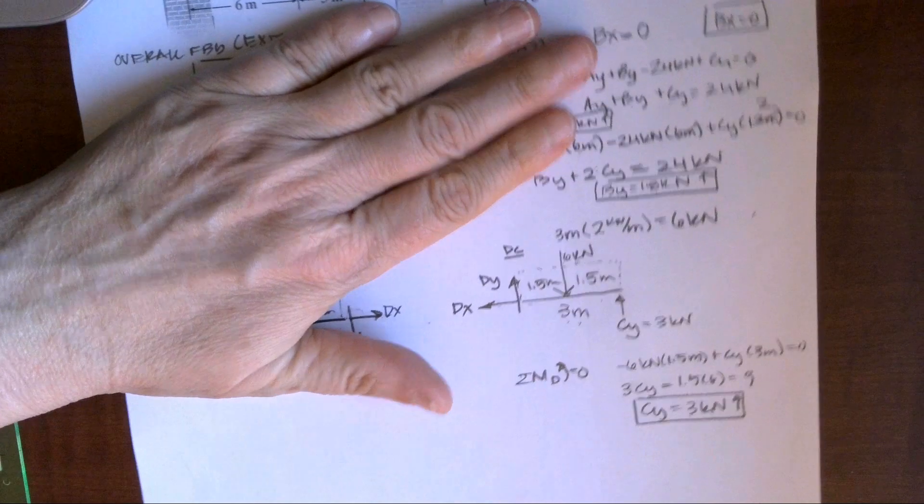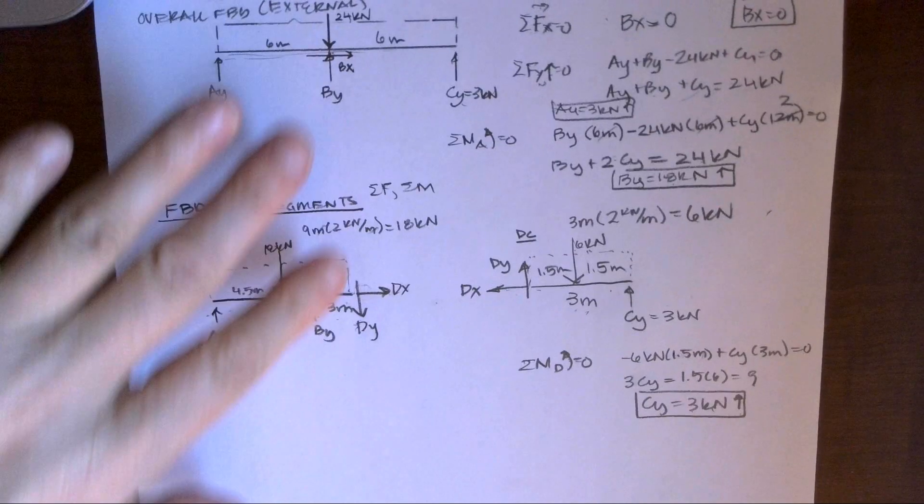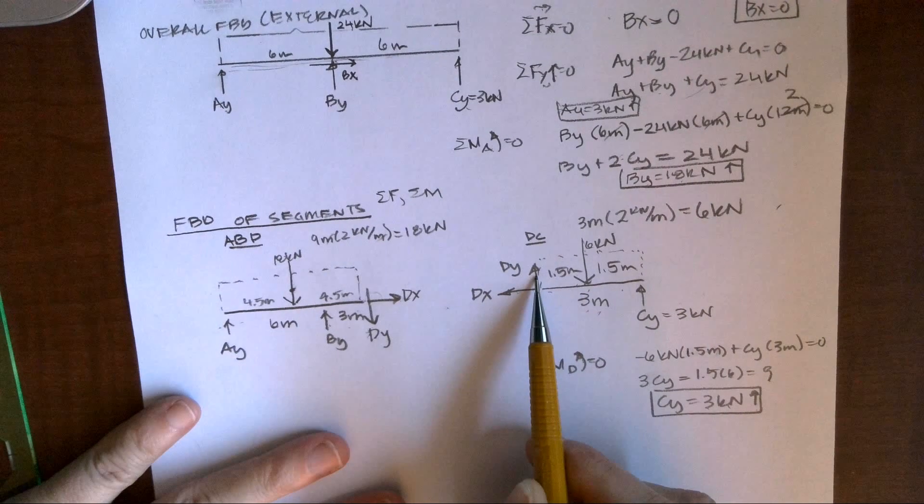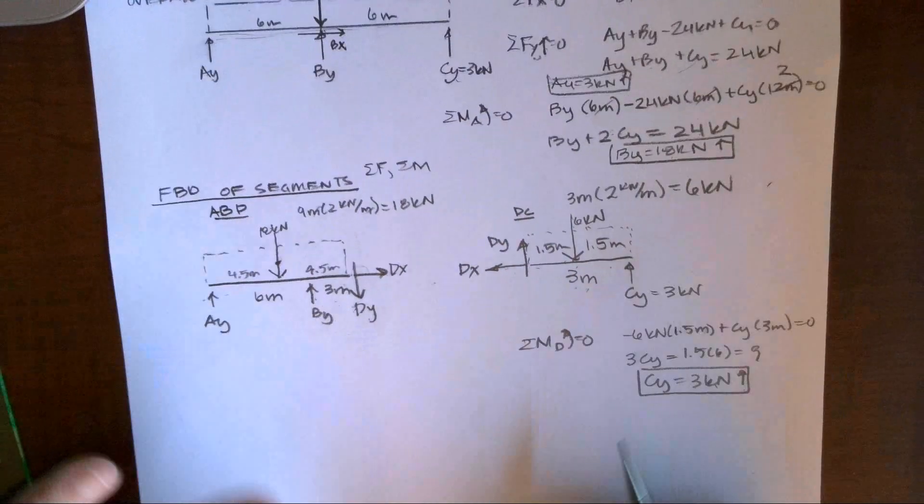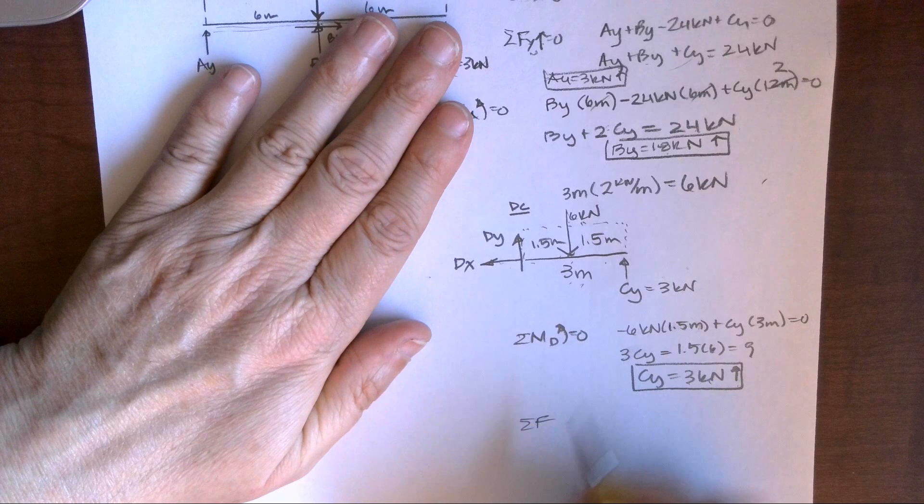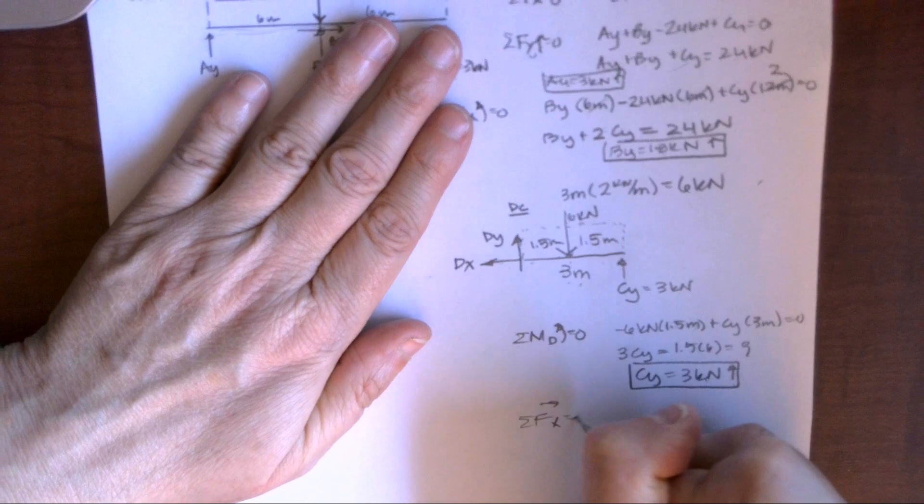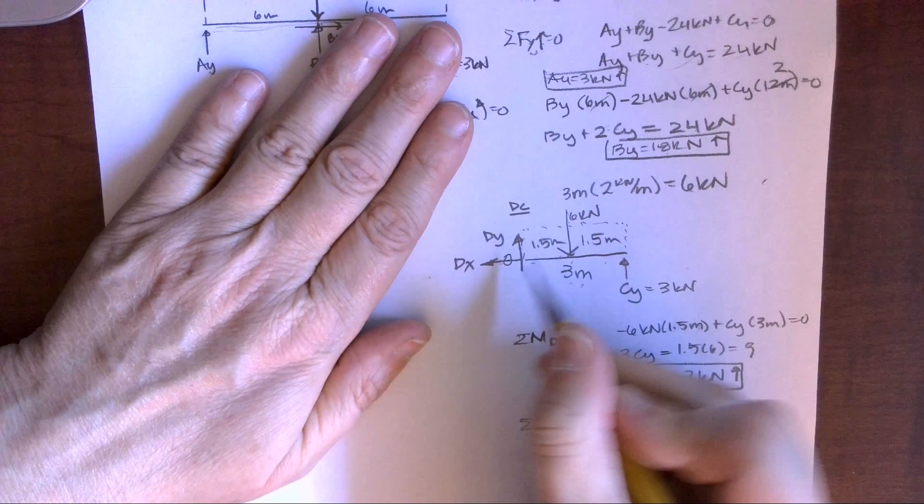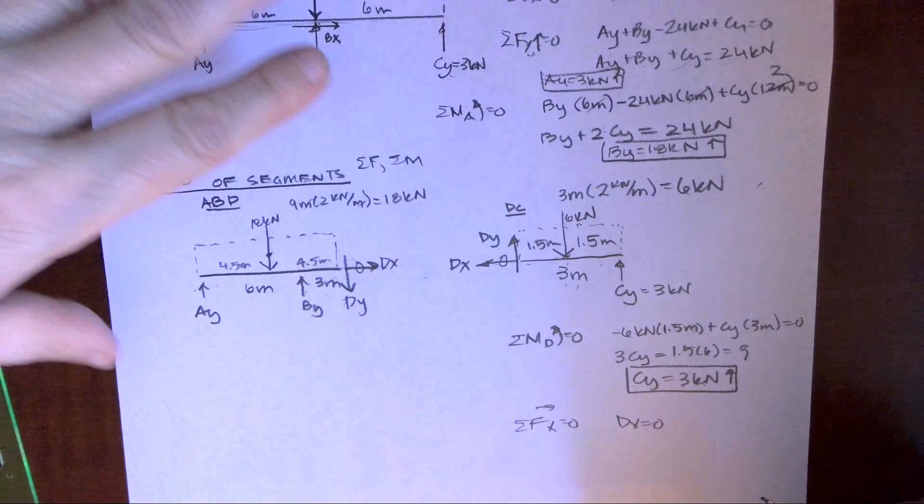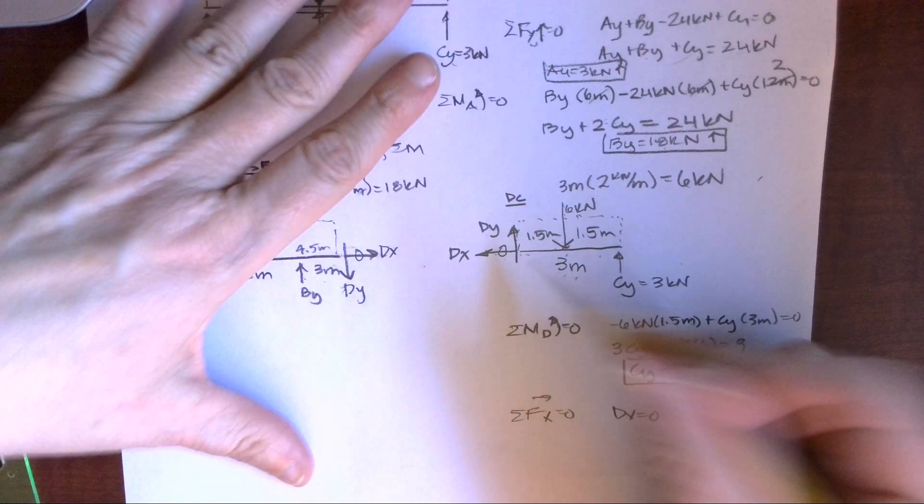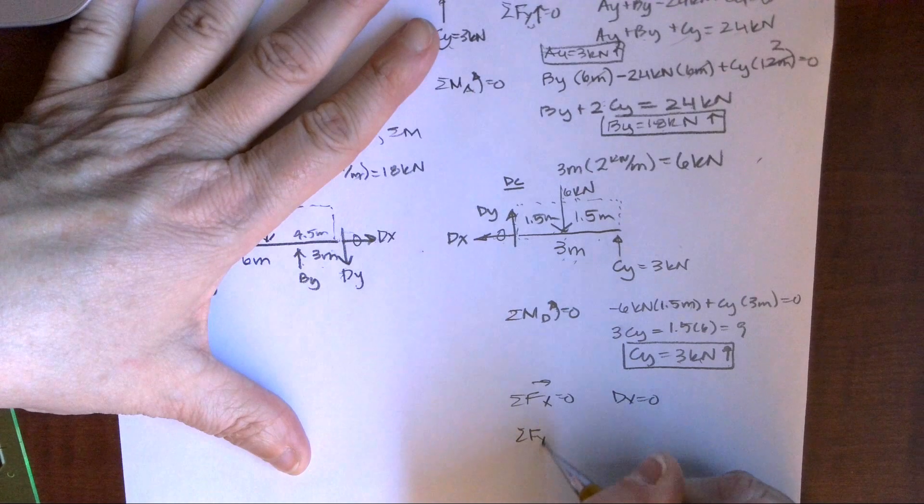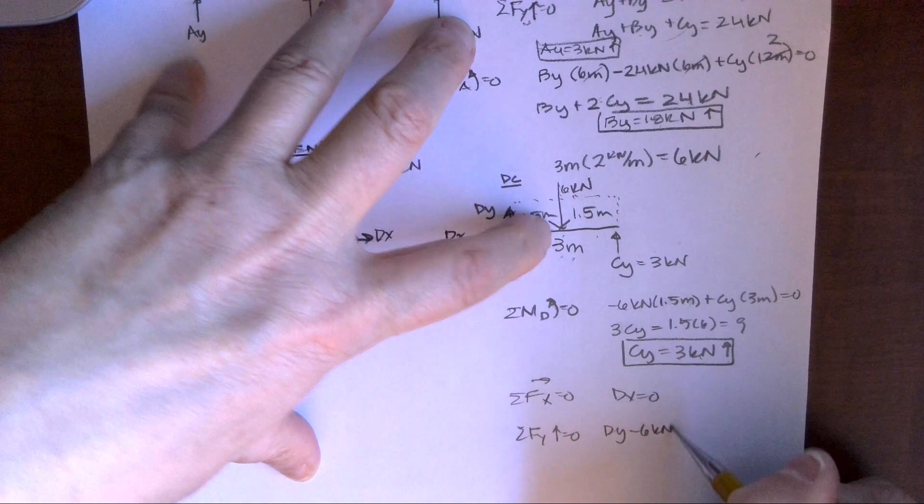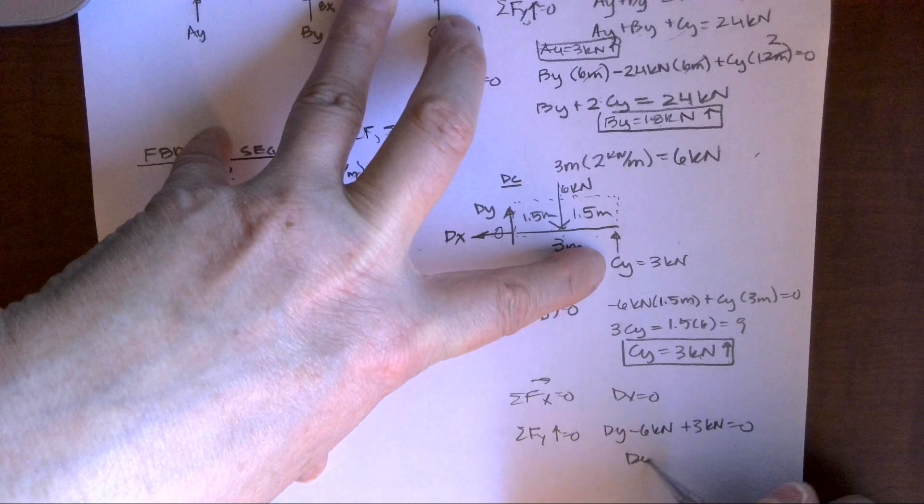Once I have 18, I can come back up here and quickly find that AY is three kilonewtons positive, so it too is going up. So I'm going to call this method one, going back to my overall free body diagram. The other thing I could do is just use these segments. If I can figure out what DY is here, then I know what DY is here. So, let's continue. Let's sum forces in the X direction. They equal zero. So, DX has to equal zero. And if DX on this side is zero, DX on that side is zero.